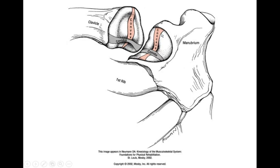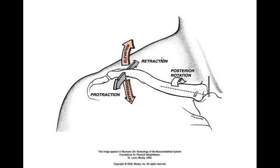A saddle joint means that with motion in one plane, the manubrium will be the concave element and the clavicle will be the convex element — that's for the motions of elevation and depression. And then in the other plane, the manubrium will be the convex member and the clavicle will be the concave, which is the situation for protraction and retraction. The other motion that occurs at the sternoclavicular joint is posterior rotation, occurring around the longitudinal axis through the length of the clavicle, and only during elevation of the humerus or raising the arm over the head. This is an automatic motion — you can't just sit there and posteriorly rotate the clavicle. So the planes of motion are elevation and depression, protraction and retraction, and posterior rotation.